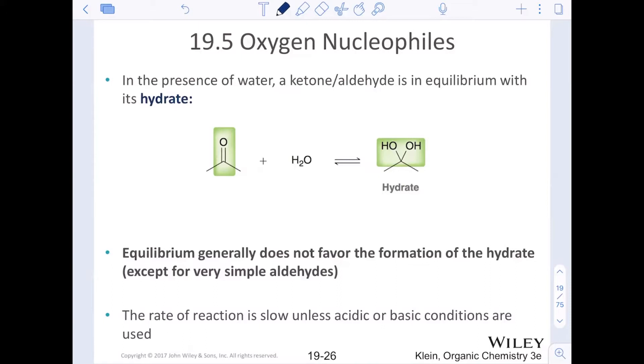Now, in the presence of water, ketones and aldehydes will be in equilibrium with its hydrate, and so we see just with plain old water, a ketone or an aldehyde carbonyl compound can form this hydrate, which is similar to a diol, two alcohol groups. But why it's called a specific hydrate is because the carbon that holds both of the alcohols is the same one, the alpha carbon there of the carbonyl. Equilibrium does not generally favor the formation of the hydrate for these types of equilibriums which has water. The reaction is very slow unless we use acidic or basic conditions with it.